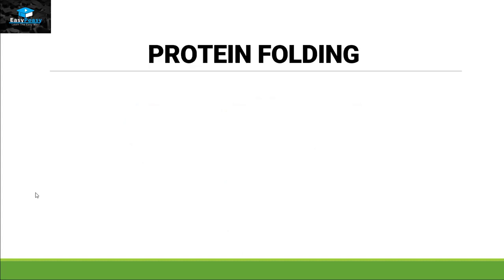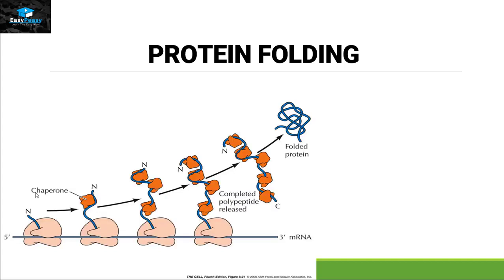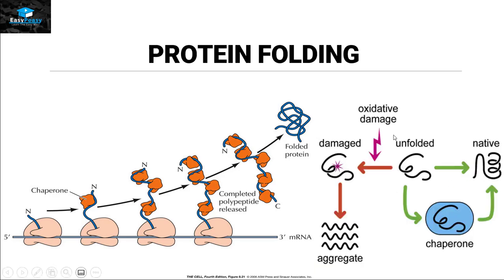Protein folding is another type of protein modification after translation. There are two types: one where the protein folds by itself, and one where it needs a helper protein called a chaperone. Chaperones attach themselves to the protein and help it fold into the correct form. As you can see in this picture, the unfolded protein goes into the chaperone and the chaperone brings it to a native active state by folding it in the correct position.